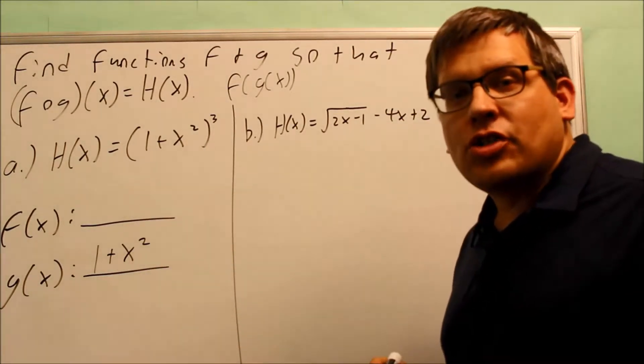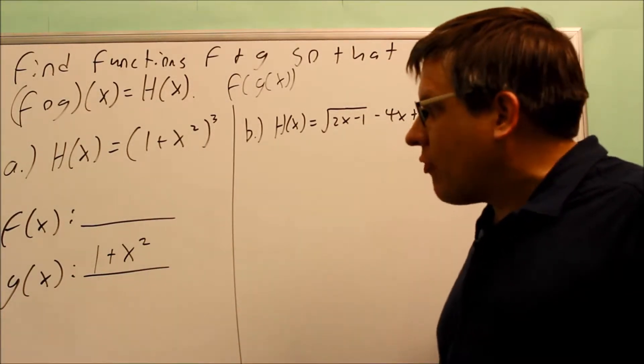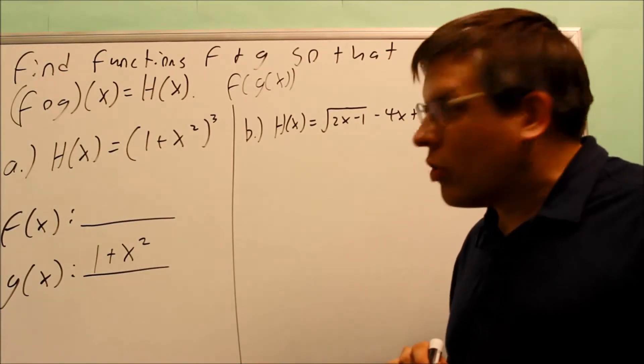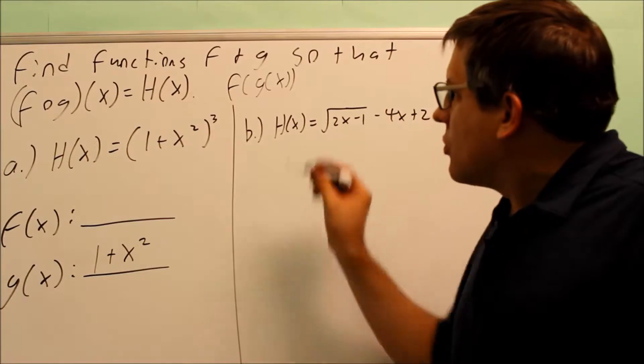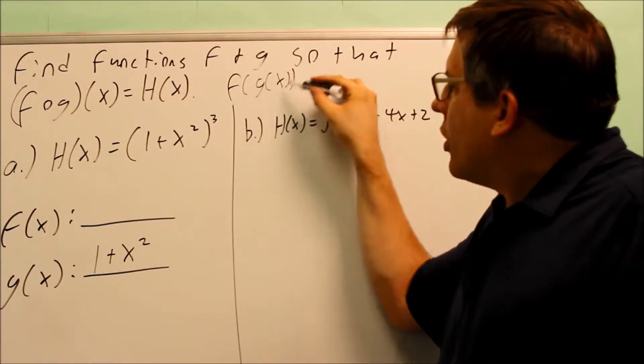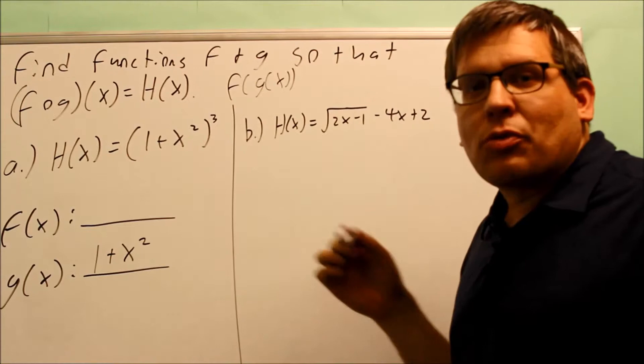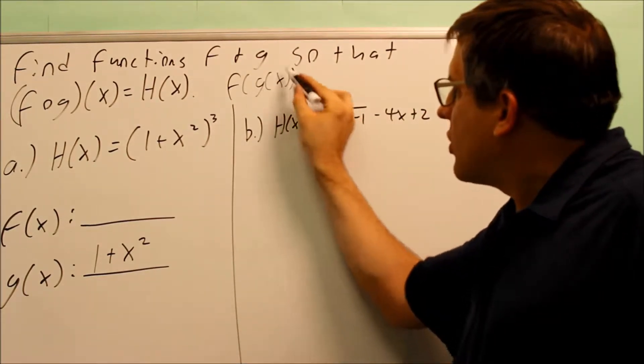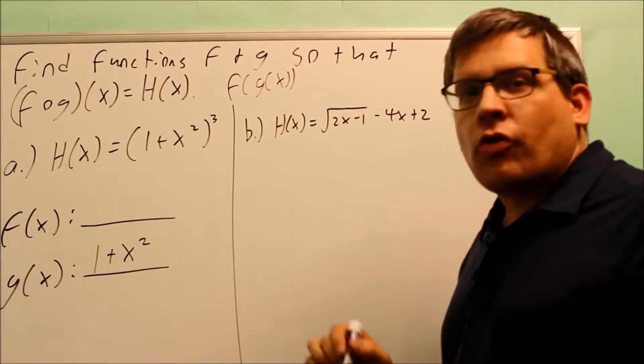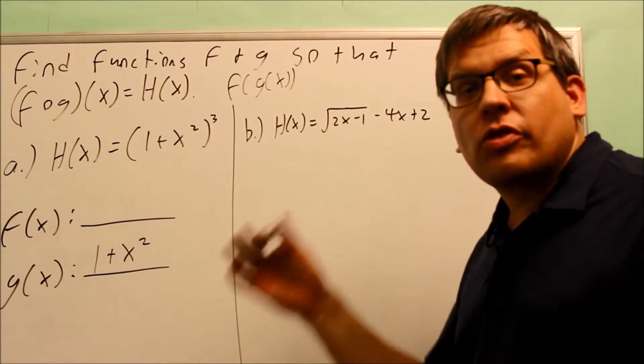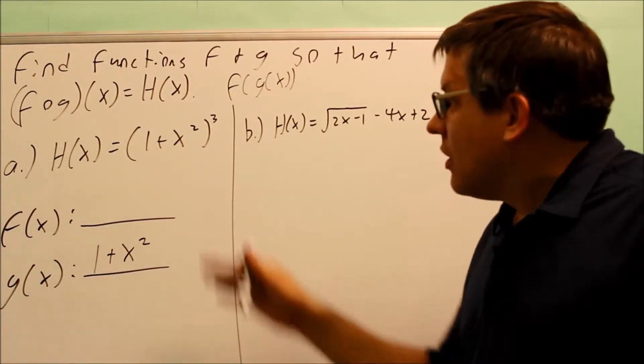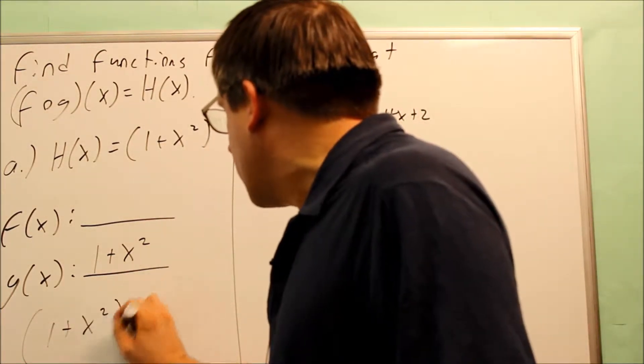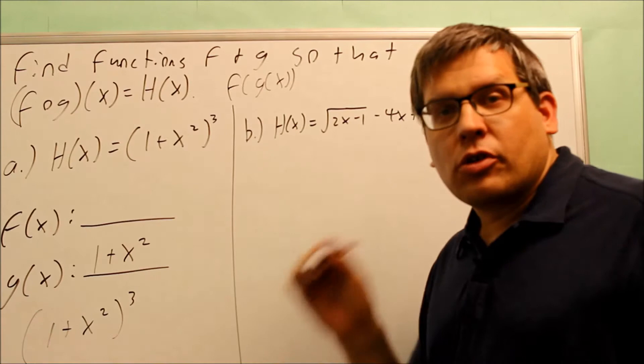Now we've got to find the f of x. In the previous problems that you've looked at before, typically what I do is I put a g of x into the f. Typically what I do is I would remove an x, replace it with what's inside the parentheses. Well, if we're going to go back the other direction, we do the exact opposite. I take my expression, 1 plus x squared to the third power.